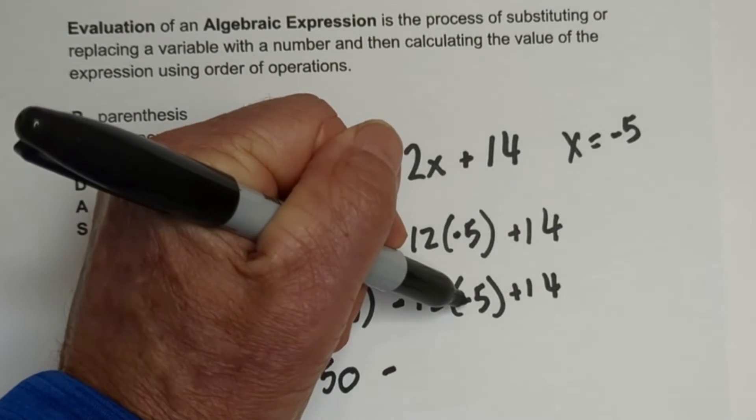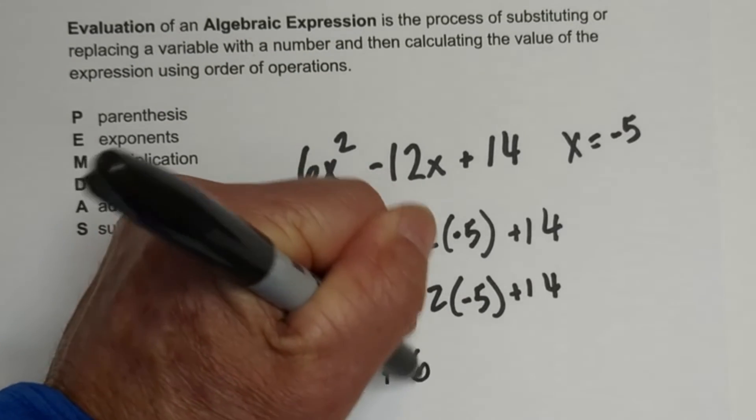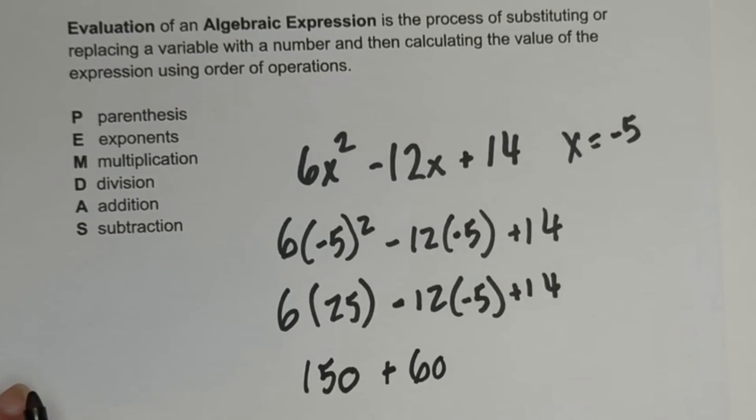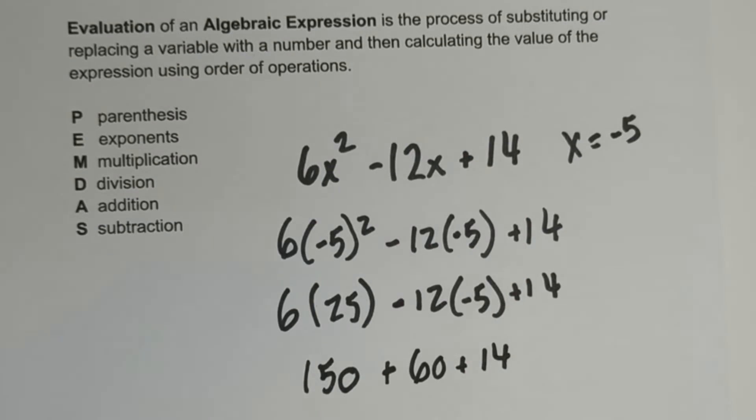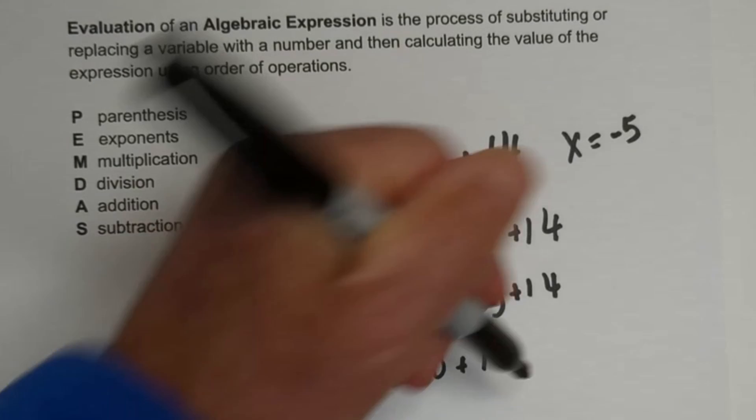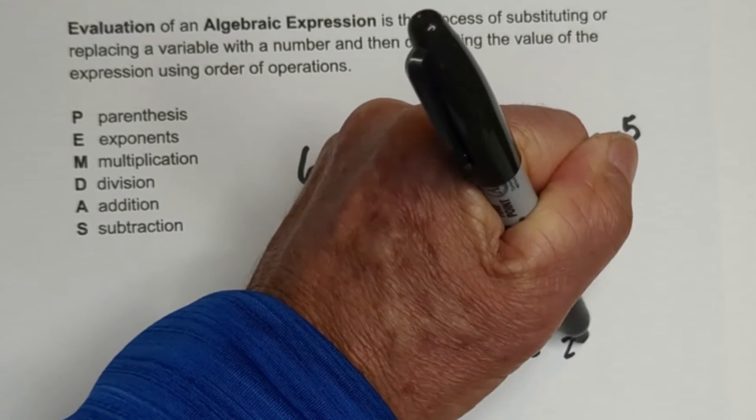Negative 12 times negative 5 is 60 because remember negative times negative becomes a positive, plus 14. And now we're down to addition and we just add everything together and that equals 224.